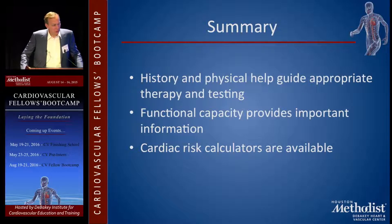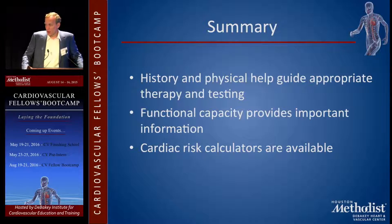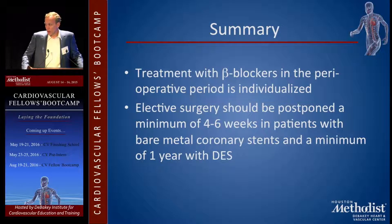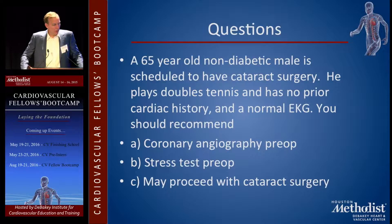In summary: history and physical help guide appropriate therapy and testing. Functional capacity provides important information. Cardiac risk calculators are available. Treatment with beta blockers in the perioperative period is individualized. Elective surgery should be postponed four to six weeks in patients with bare metal stents and a year with drug-eluting stents.